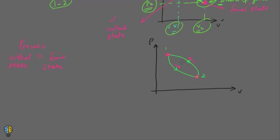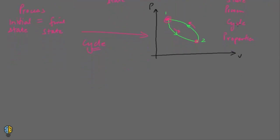When a process happens — a change from one state to another — and then the state is returned, we have the occurrence of a cycle. So now we have understood the difference between very important terms: the state of a system, the process that a system undertakes, the cycle that a system undertakes, and the properties of a system. Now let us bifurcate the types of properties.